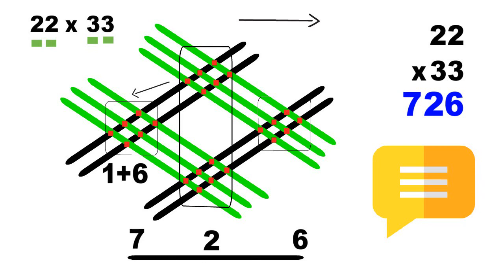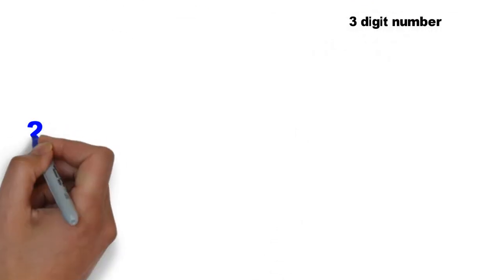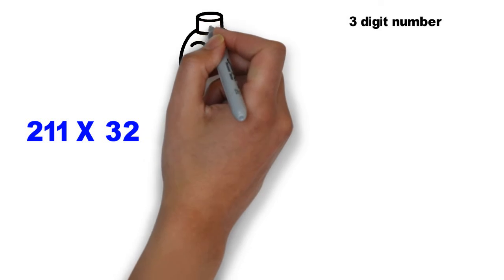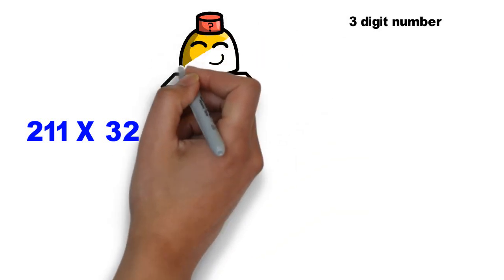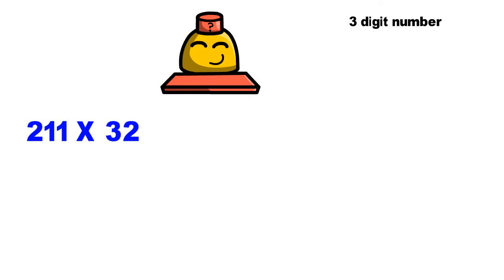Okay, now let's move on to the next problem, which is a more complex one. It has 3 digit number. 211 multiplied by 32. Here, does anything change? Well, not much. The approach is the same. But the number of zones change.